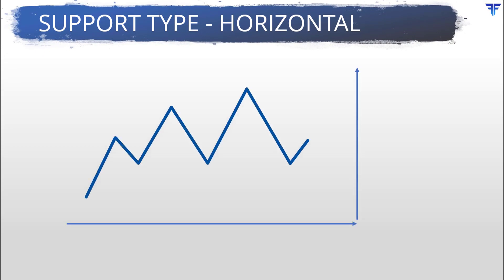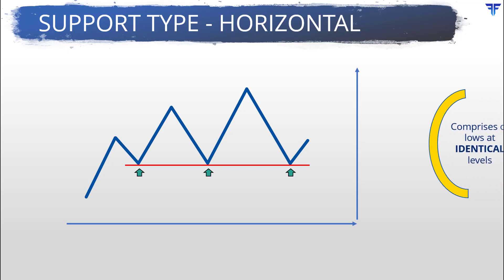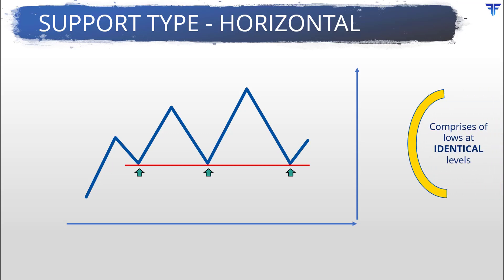Let us take up the horizontal support first. Have a look at this sample chart here. Notice that each low is essentially at the same level as its predecessor. As a result, if the lows are connected using a line, you will notice a line that is horizontal. So, a horizontal support occurs when two or more lows are concentrated at identical or near identical levels.